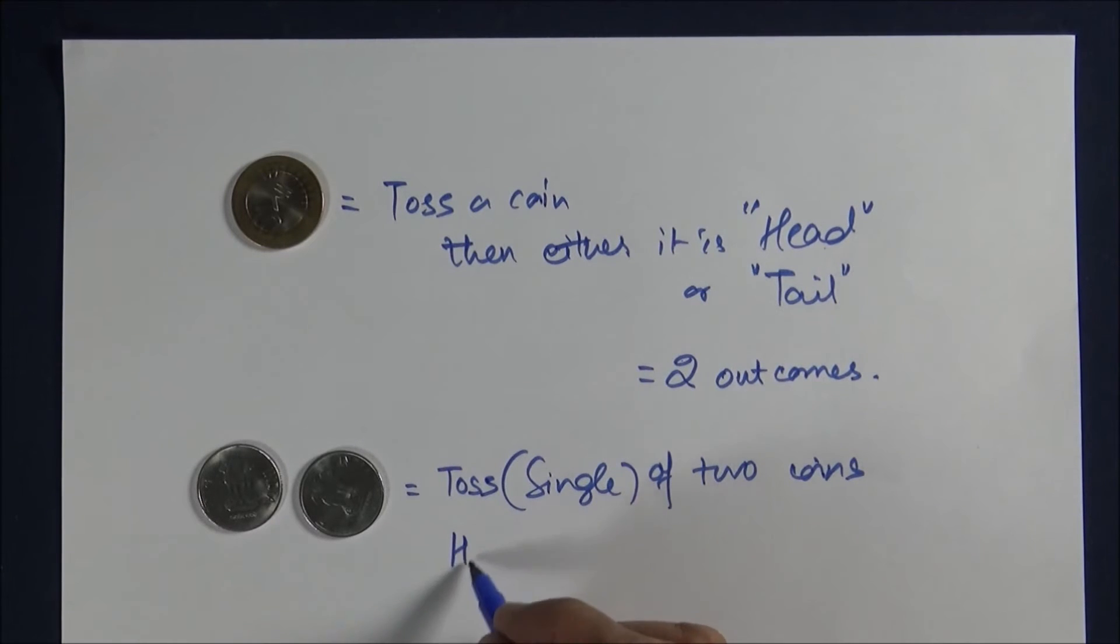Both can be heads, both can be tails, or it could be heads and tails or tails and heads. So the number of outcomes will be four. So in case of first, the sample space will be two. And in case of two coins, the sample space will be four.